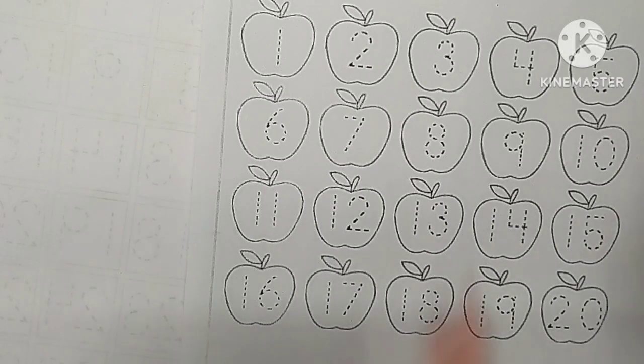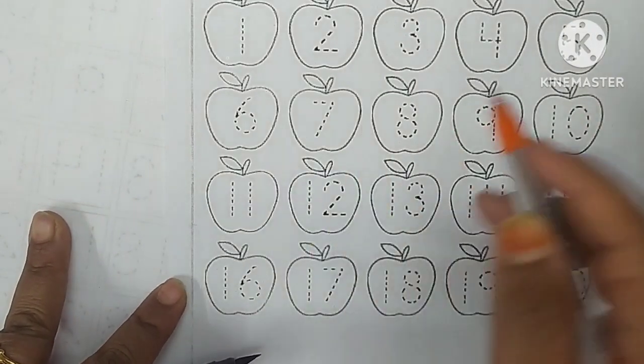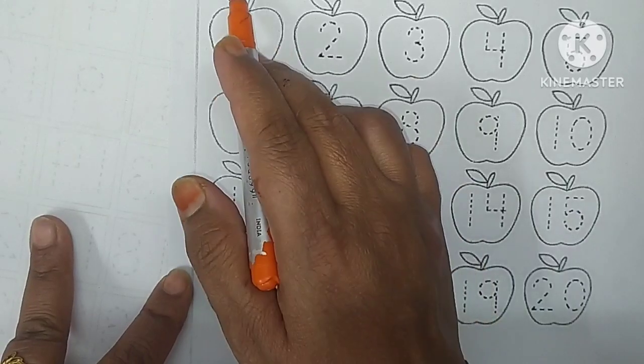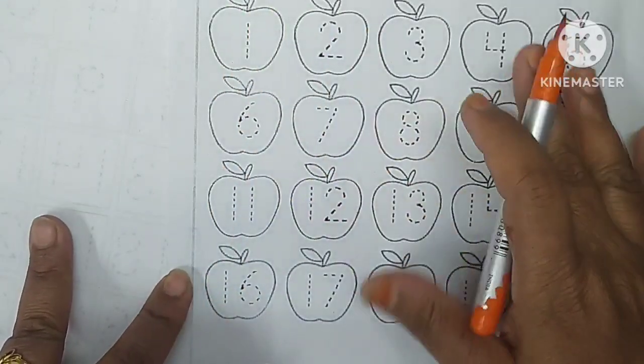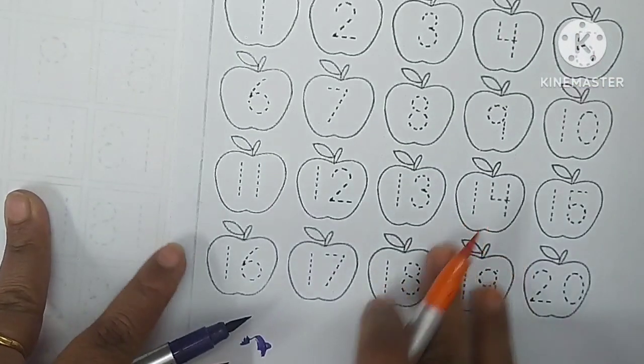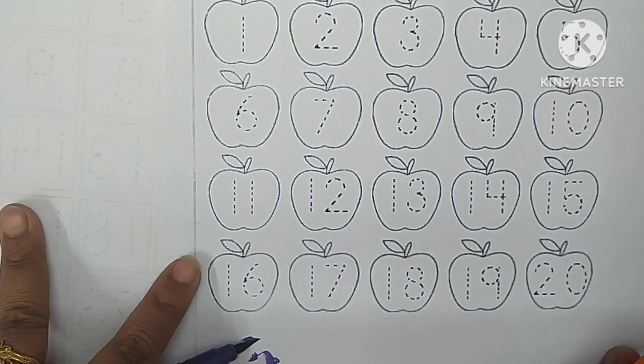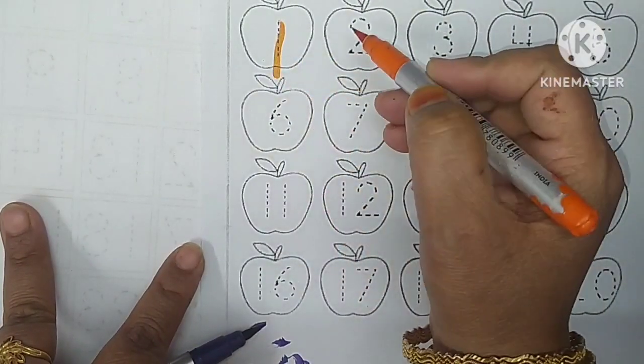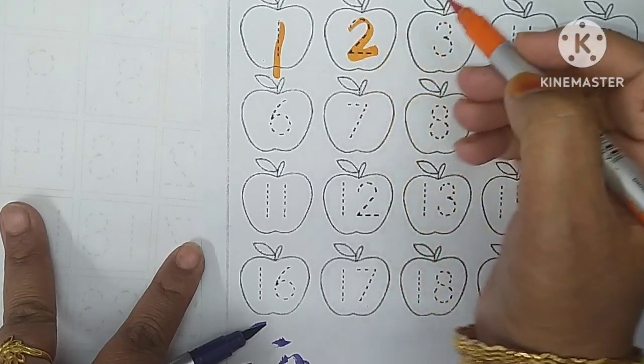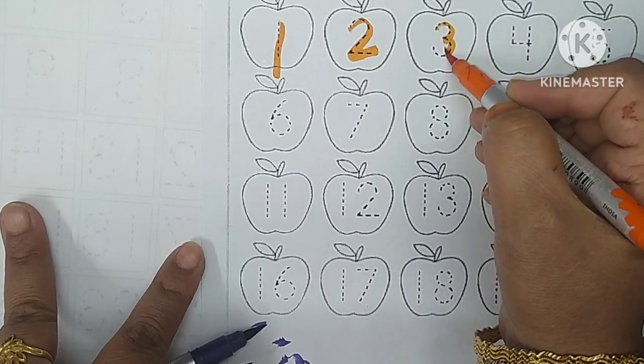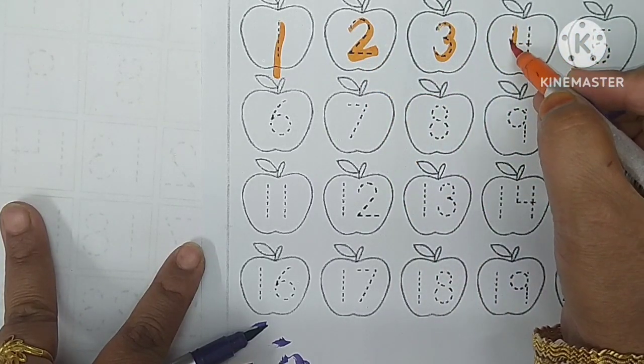Trace the numbers 1 to 20. Number one - O-N-E, one. Two - T-W-O, two. Three - T-H-R-E-E, three.